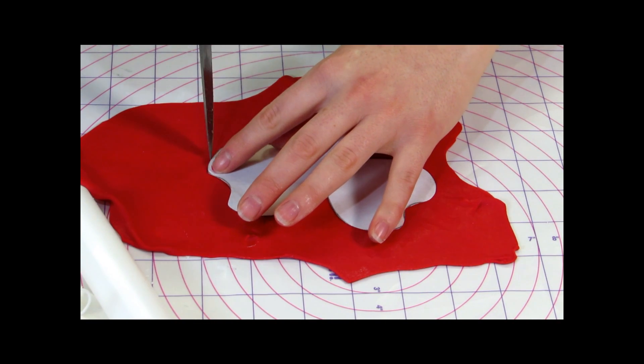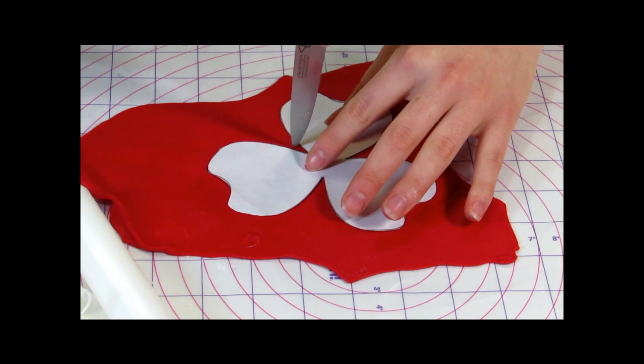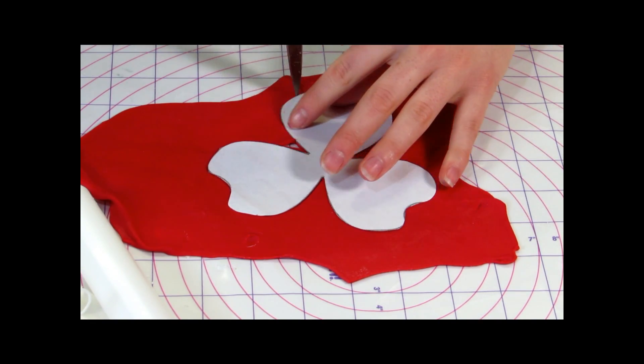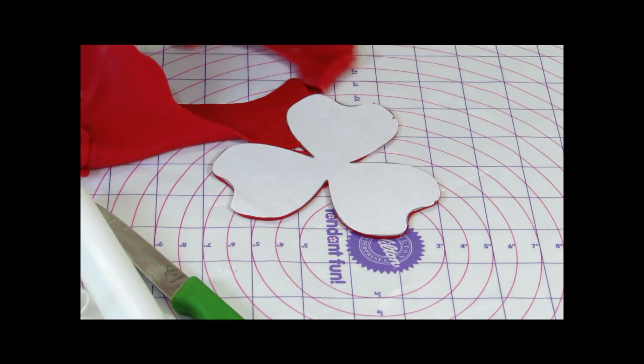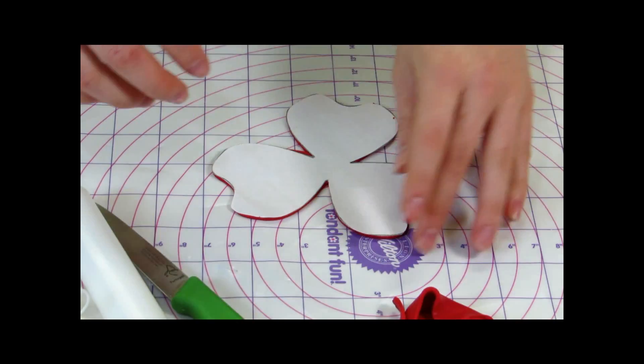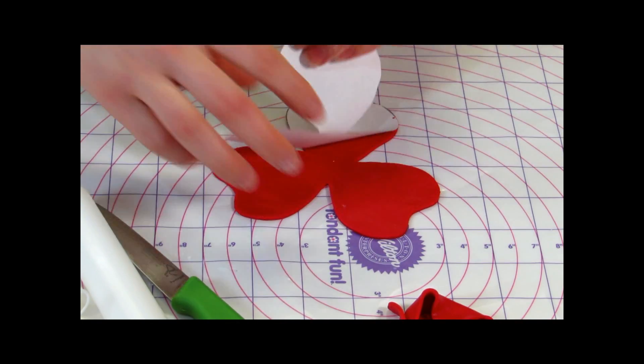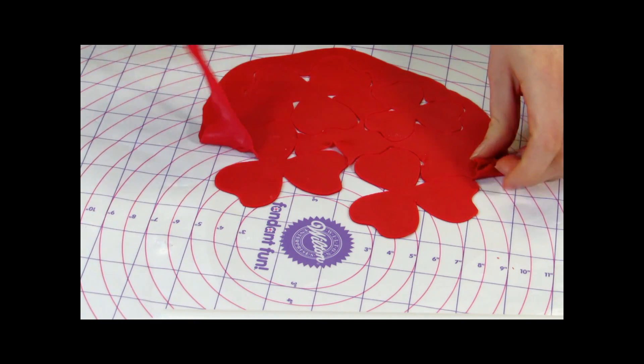Roll out some red fondant, place your template over top of your fondant and then you're just going to trace around it with your knife using the paper as a guide. Peel off your fondant and then peel off the piece of paper. Cut out the rest of your petals.